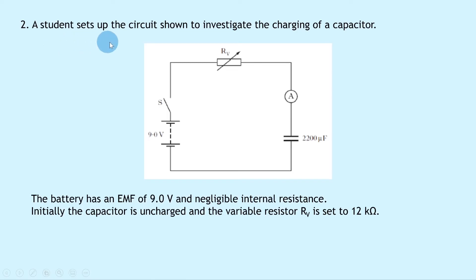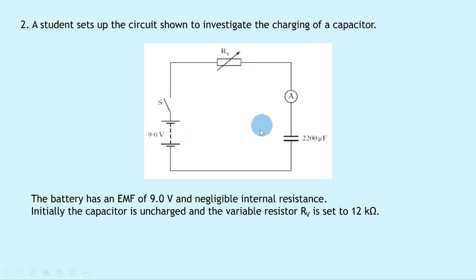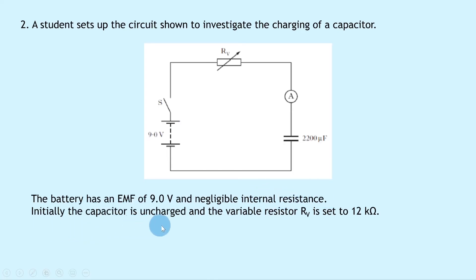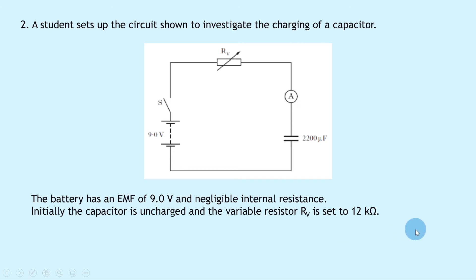Question two says a student sets up the circuit shown to investigate the charging of a capacitor. We've got a switch, a 9 volt battery, a variable resistor in series with an ammeter, and a capacitor of 2200 microfarads. The battery has an emf of 9.0 volts and negligible internal resistance. Initially the capacitor is uncharged and the variable resistor RV is set to 12 kilohms.